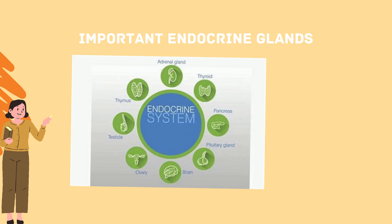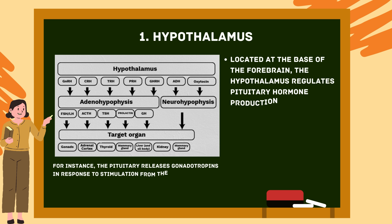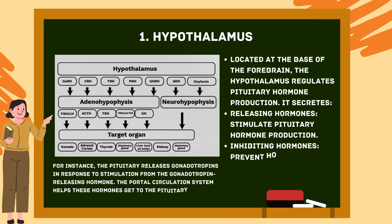Important endocrine glands. Number one: Hypothalamus, located at the base of the forebrain. The hypothalamus regulates pituitary hormone production. It secretes releasing hormones that stimulate pituitary hormone production, and inhibiting hormones that prevent hormone secretion by the pituitary gland. For instance, the pituitary releases gonadotropins in response to stimulation from gonadotropin-releasing hormone. The portal circulation system helps these hormones reach the pituitary gland.